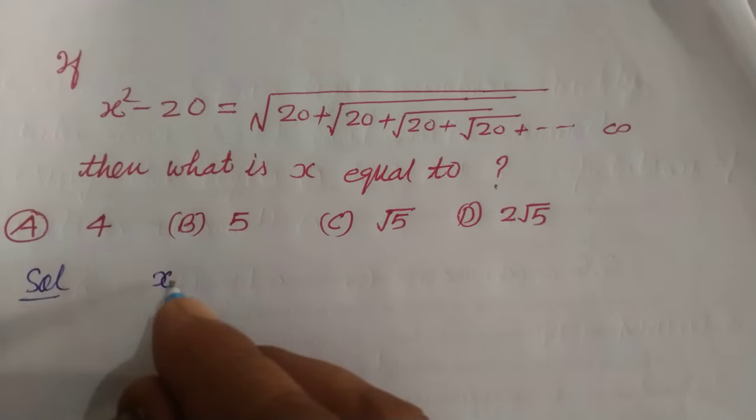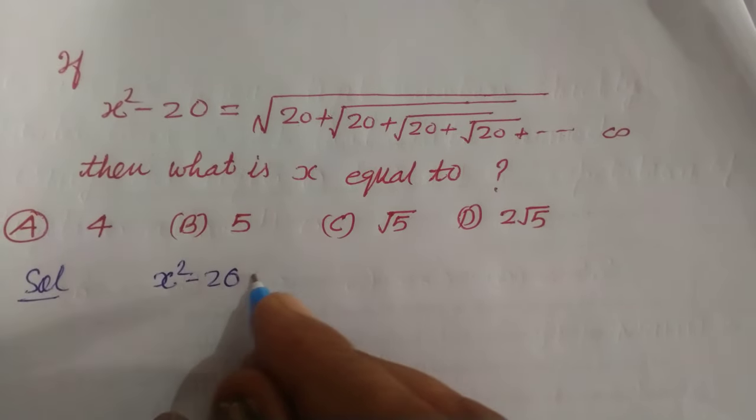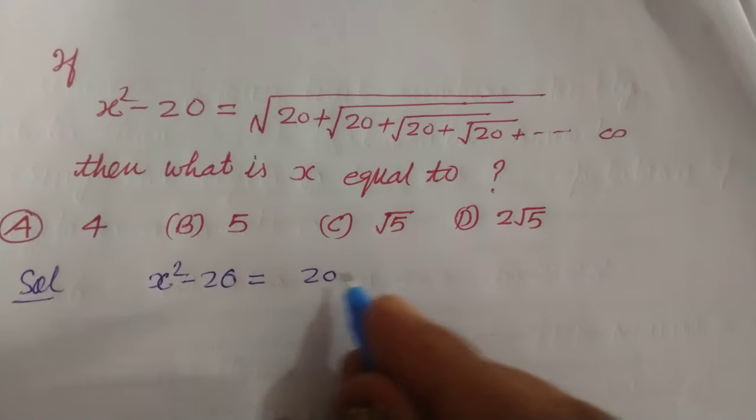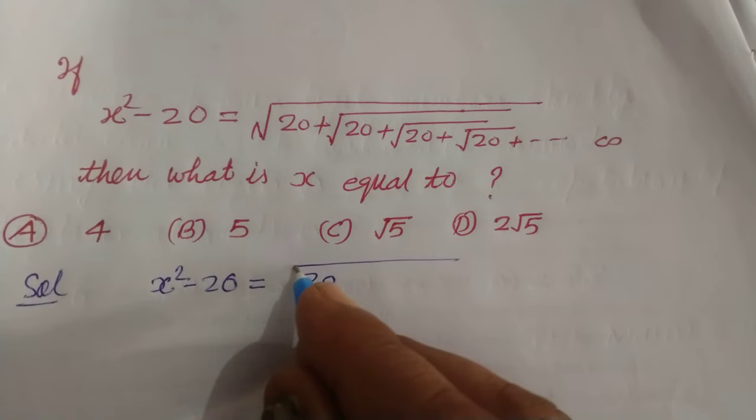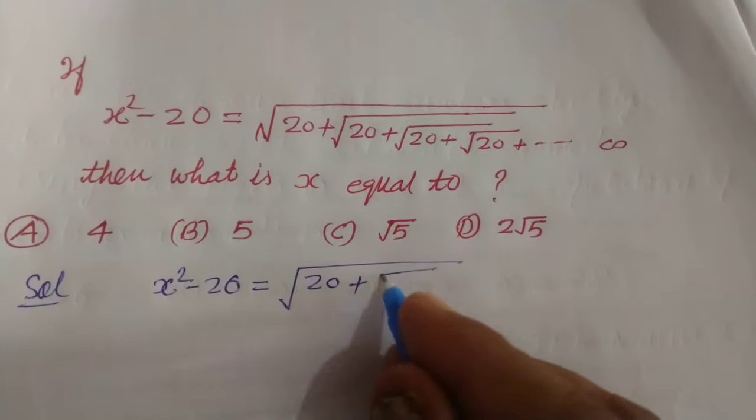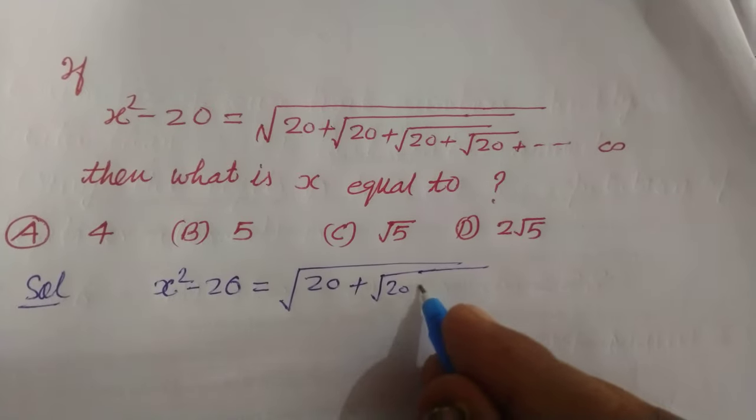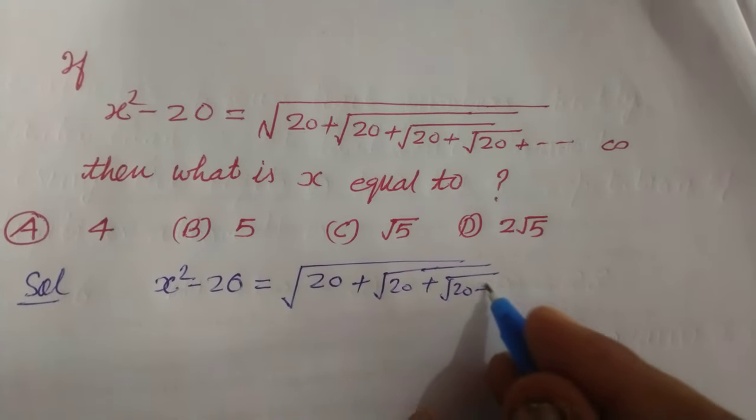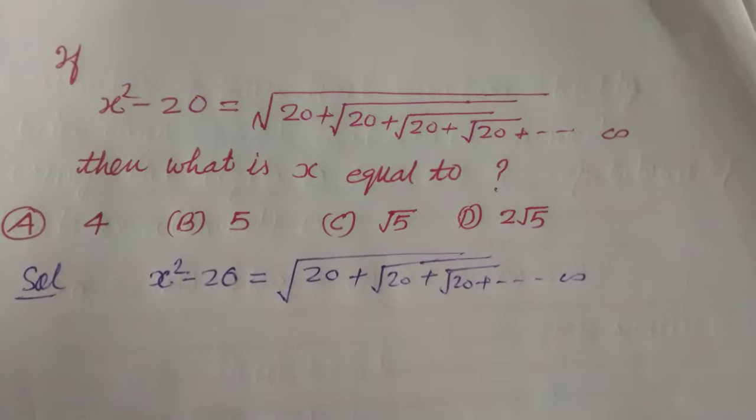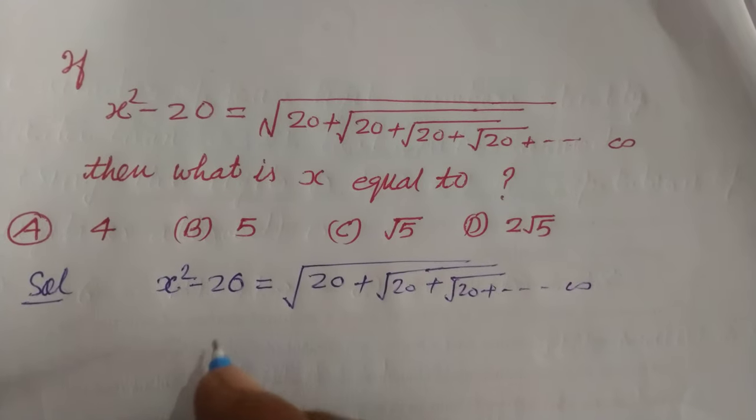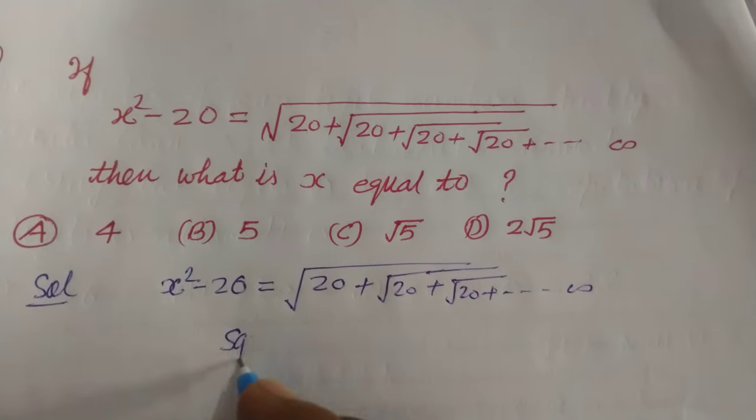So student, here we have X square minus 20 equal to root 20 plus root 20 plus root 20 and so on up to infinite. So squaring both sides first.